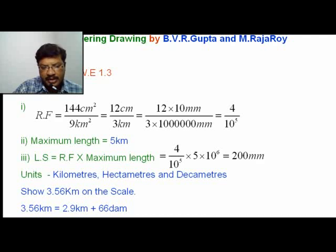3.56 km can be written as 2.9 km plus 66 decameters, because on the Vernier Scale you are going to get decameters. Here the last digit is 6, so you subtract 66 decameters from 3.56 km to get 2.9 km plus 66 decameters.